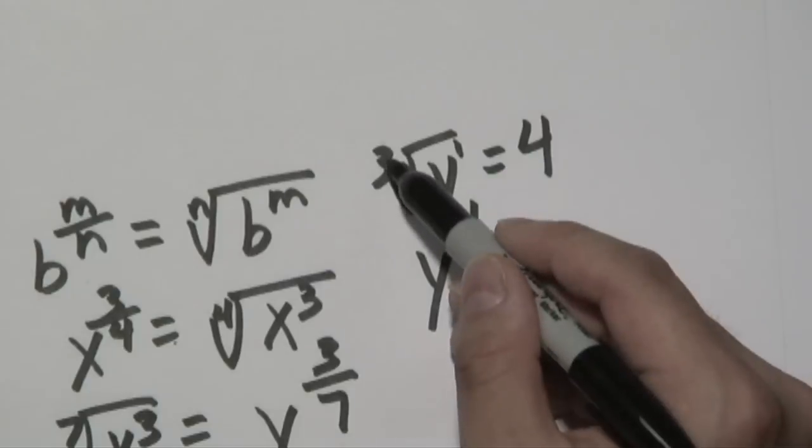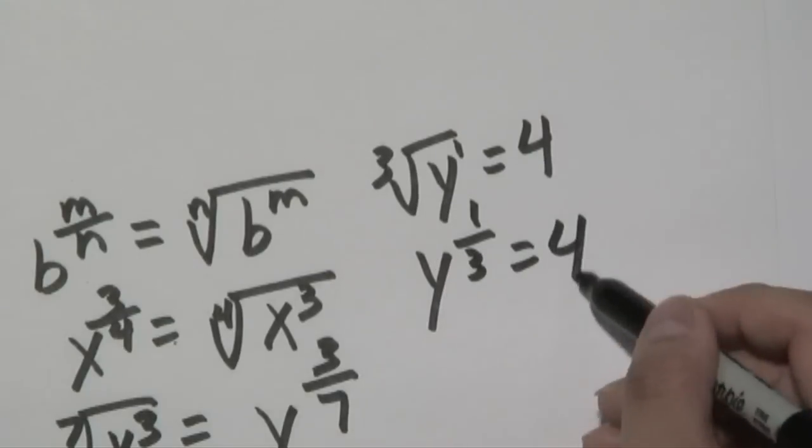Now again, the inside is your numerator, your outside is your denominator, and that's going to equal to 4.